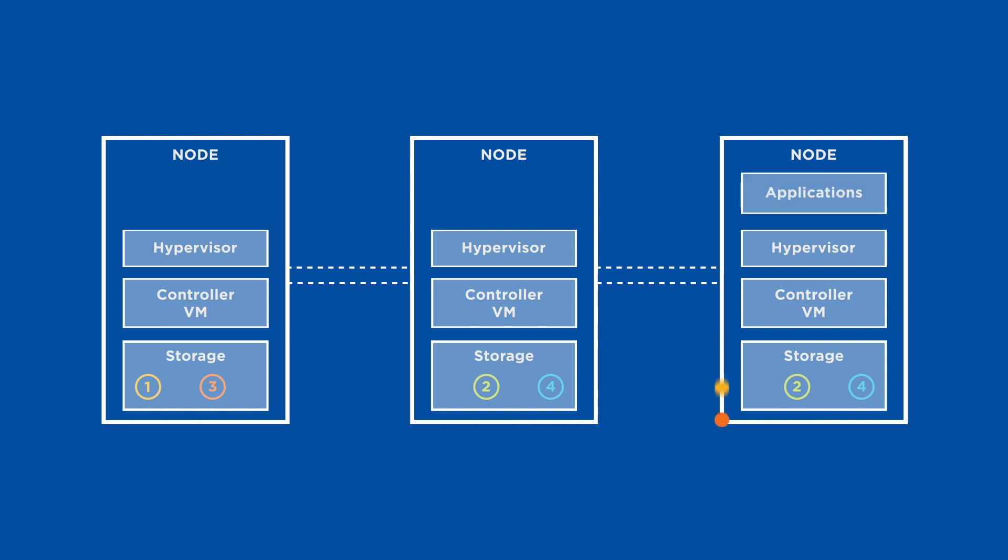Nutanix makes this possible with fine-grained data and metadata structure, enabling small pieces of data to be moved around dynamically. Complementary to data locality are innovations like the Autonomous ExtentStore, or AES, which provides metadata locality, and BlockStore, which provides an optimized data path for AOS. BlockStore, when used with Intel's Storage Performance Development Kit or SPDK, enables technologies like NVMe and Optane to be leveraged fully by providing an optimized data path that can talk directly to storage devices while avoiding the kernel, enabling consistent high performance.